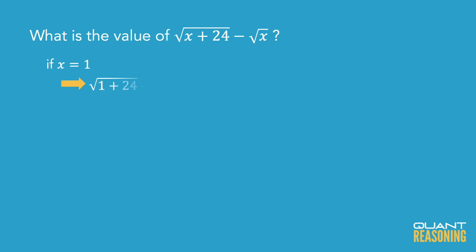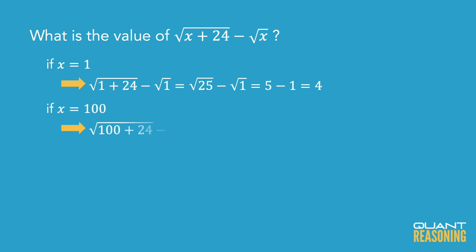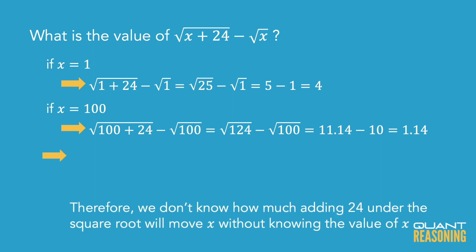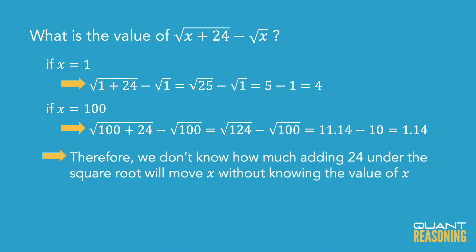I'm wondering: what if x is 1 versus x is 100? If x is 1, then adding 24 would make it 25, and the difference between root 1 and root 25 is 4. On the other hand, if x is 100, adding 24 would make it 124, and the difference between root of 100 and root of 124 is just slightly more than 1. This tells me that adding 24 underneath the square root moves you up the number line by different amounts depending on how far from 0 you started.